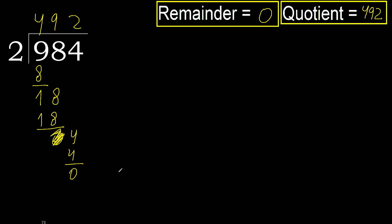Remainder is 0. Therefore, 984 divided by 2 equals 492.